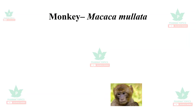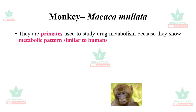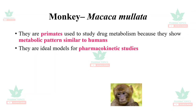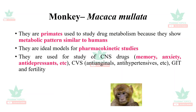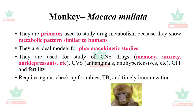The monkey, Macaca mulatta, is a non-human primate used for studying drug metabolism because it shows a metabolic pattern similar to humans. It is an ideal model for pharmacokinetic studies and for studying drugs acting on the central nervous system — memory, anxiety, antidepressants — and cardiovascular drugs such as anti-anginals, antihypertensives, drugs acting on the GIT, and fertility studies. Regular checkups for rabies and tuberculosis and timely immunization are required.